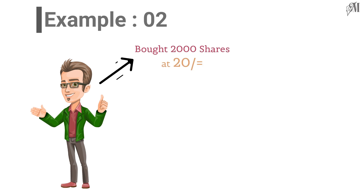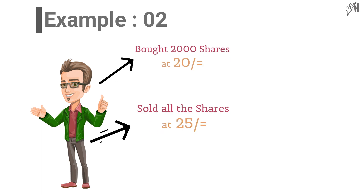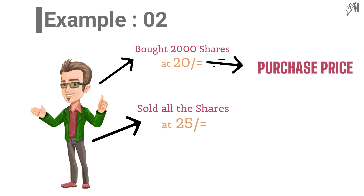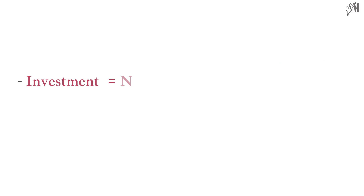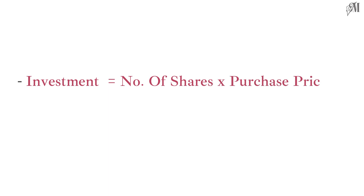Now let us move on to a simple example. Mr. Perera bought 2,000 shares at 20 rupees and sold all of them when the market price increased to 25 rupees. Here, 20 rupees is the purchase price and 25 rupees is the market price. His investment is found by multiplying the number of shares by the purchase price: 2,000 × 20 = 40,000 rupees.